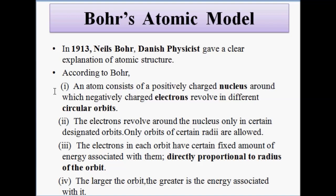The postulates of Bohr's atomic theory: the first postulate is that an atom consists of a positively charged central core, called the nucleus. The negatively charged entities called electrons revolve around this positively charged central nucleus in circular pathways, and these circular pathways are called orbits.